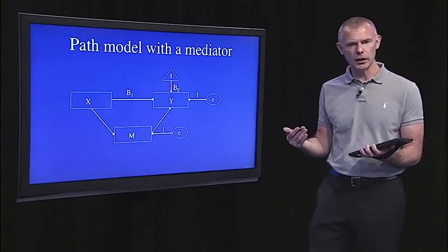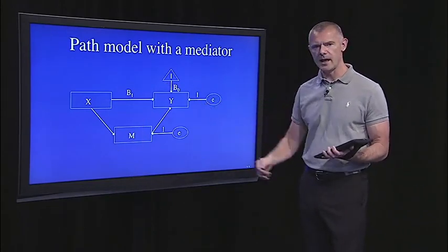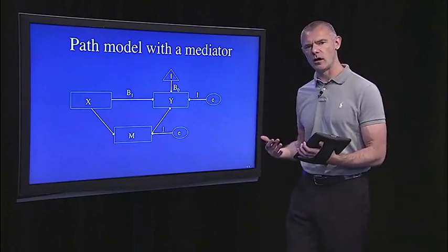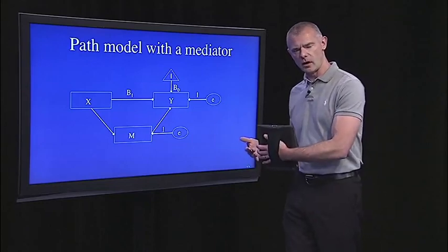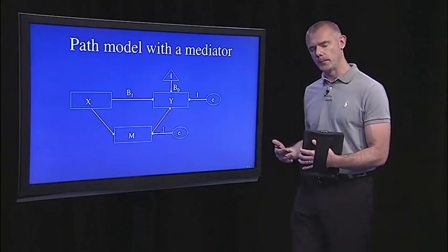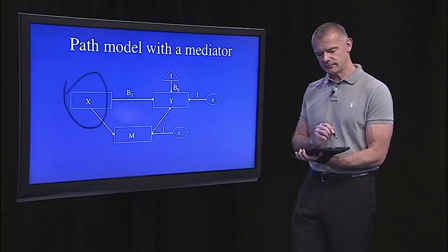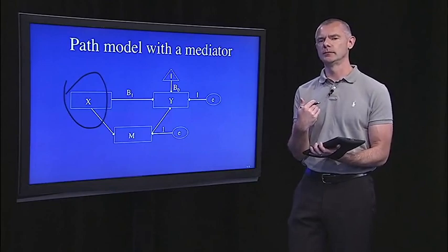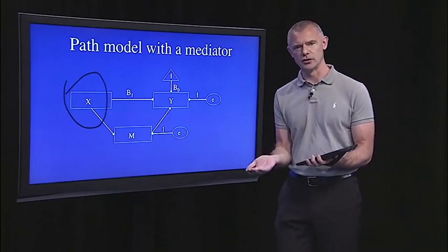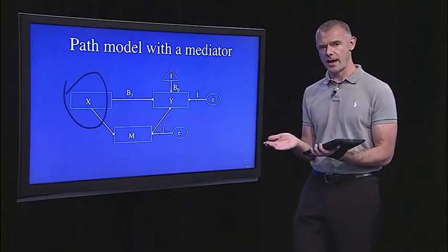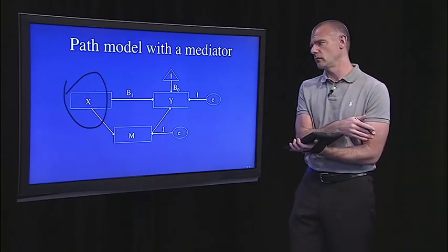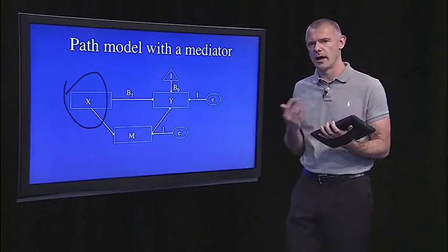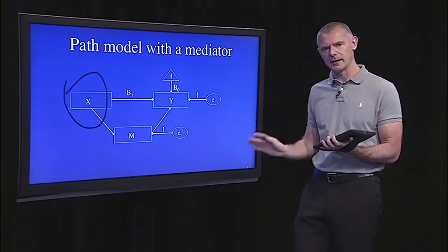In modeling lingo, these variables Y and M are said to be endogenous. Because the causes of variation are thought to be inside our model. They're in our theoretical account. Whereas X, we're not saying anything about the causes of X. X is our predictor. So that's thought to be an exogenous variable. The causes of X are outside of our model. We don't need to explain that theoretically.